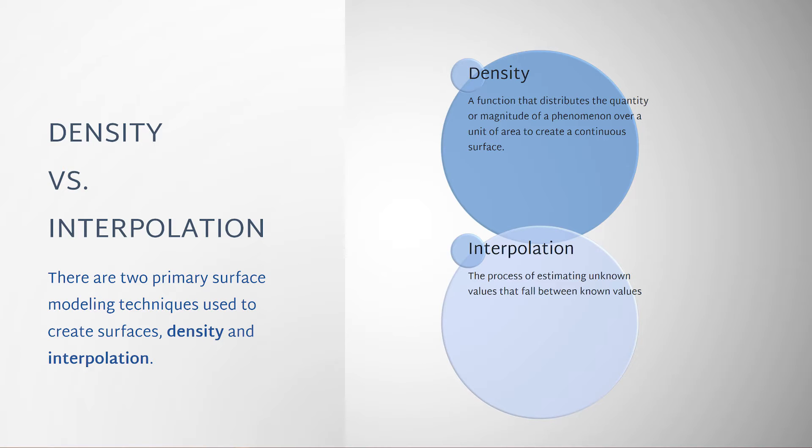Density allows you to create a surface from point locations. Known quantities of a thematic phenomenon are spread across a region based on the quantity that is measured at each location and the spatial relationship of the locations of the measured quantities.